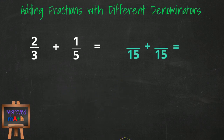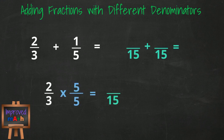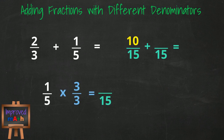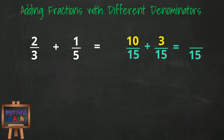Take the first fraction of 2 thirds. We're trying to get a denominator of 15, so 3 times 5 equals 15. Since we multiplied the denominator by 5, we must also multiply the numerator by 5, and we get 10 over 15 as our new equivalent fraction. For 1 fifth, we multiply the denominator by 3, and since we multiply the denominator by 3, we must also multiply the numerator by 3. 3 times 1 equals 3, so our new equivalent fraction is 3 over 15. Now we add 10 over 15 and 3 over 15 together to get 13 over 15. There are no common factors between 13 and 15, so this fraction is in its simplest form. We are done.